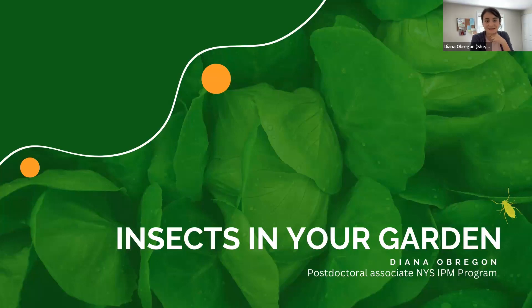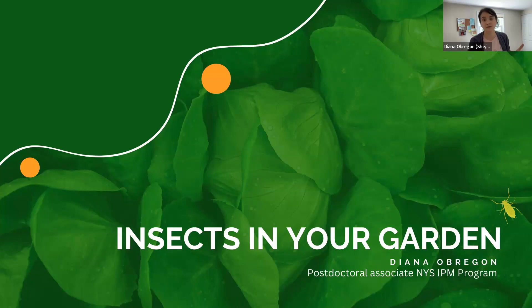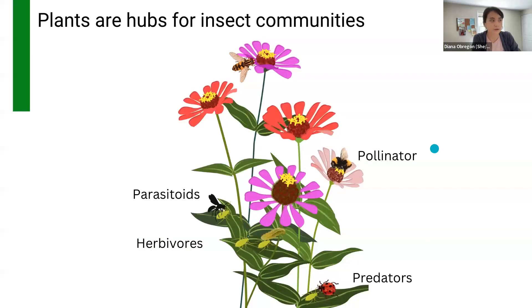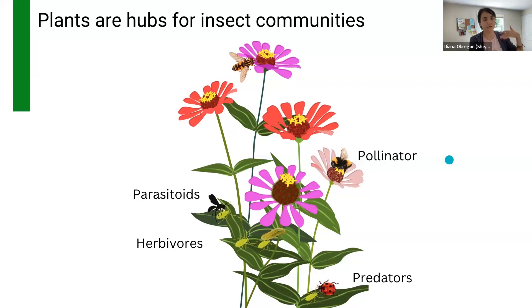Good day everyone, thanks for joining today. I'm going to take you on a quick journey to show you some of the most common insects that you can find on outdoor plants, and also some that you could find on indoor plants too. Insects are super diverse — experts estimate about 900,000 species have been reported by science, but if we keep exploring, we're going to find many more. So it's hard to really identify all of them or be aware of all of them.